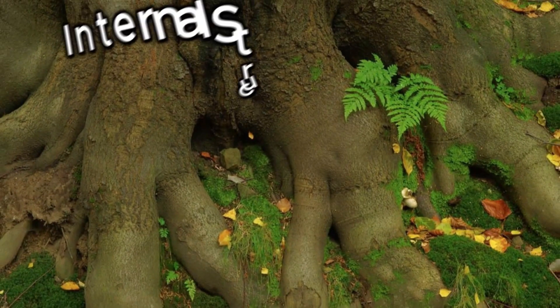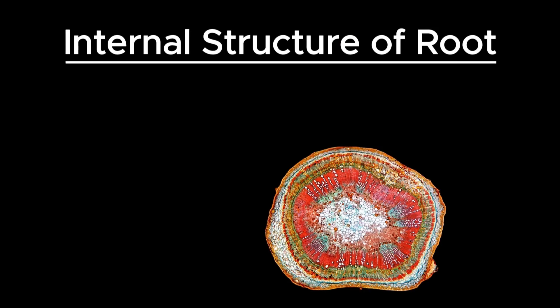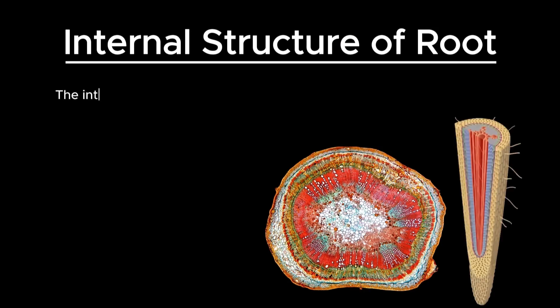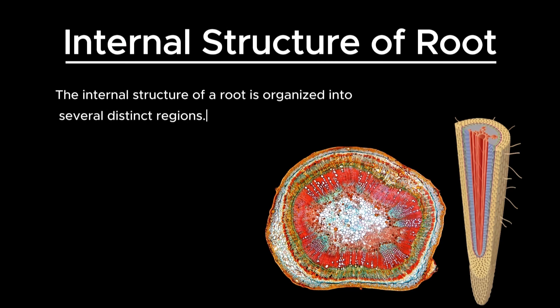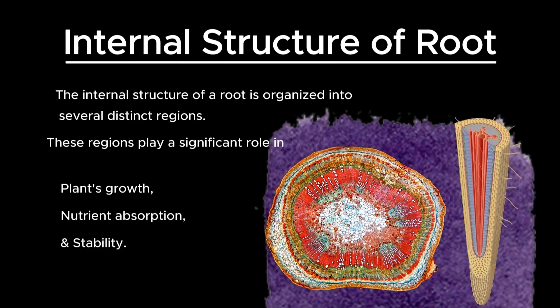From the outside, a root may look like this, but internally a root is organized into several distinct regions, each with specific functions essential for the plant's growth, nutrient absorption, and stability. Let's examine the primary regions and tissues typically present in a root.